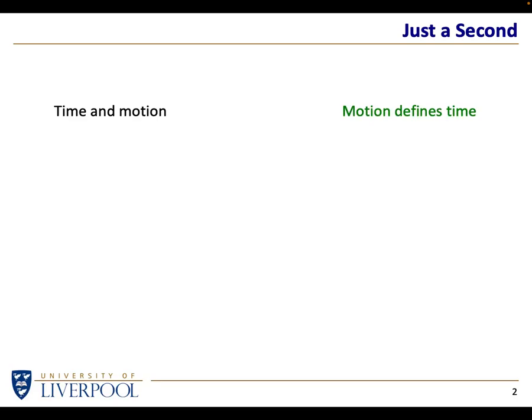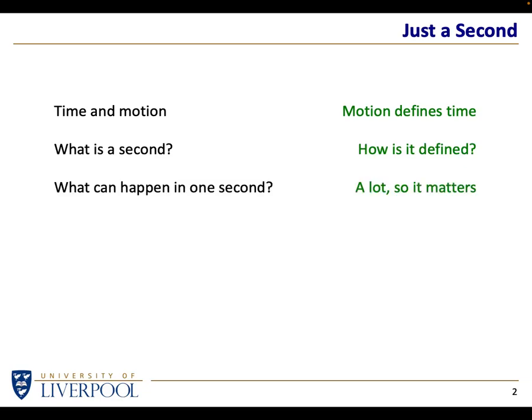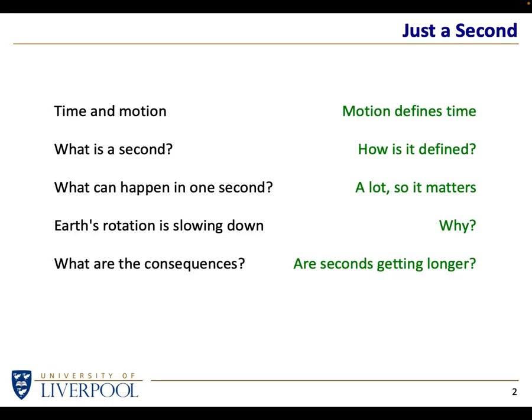I'm going to look at time and motion — how we define time in terms of motion — the definition of a second, and just as a little aside, what can happen in one second to give us an idea of how long one second is. I'll also be talking about how we know the Earth's rotation over a long period of time is slowing down, why that is, and what the consequences are over decades, centuries, and millennia. Then I'll ask: what are leap seconds and why do we need them?